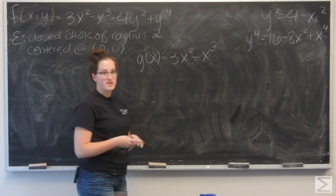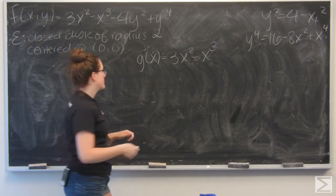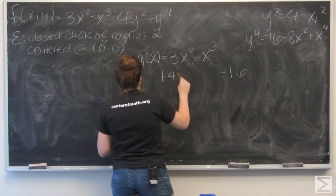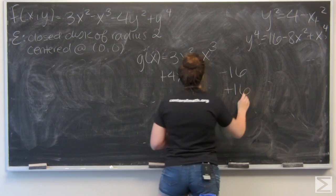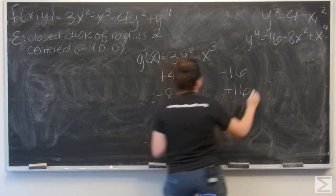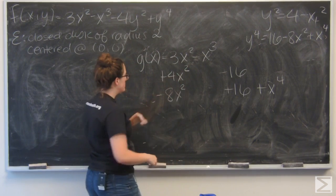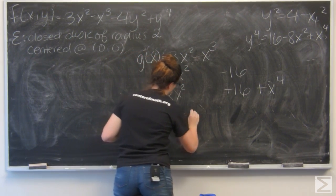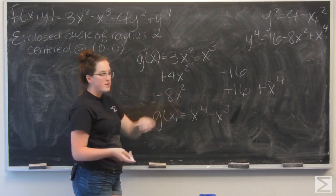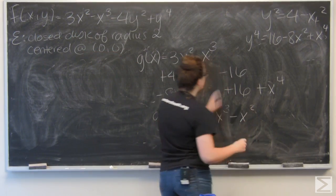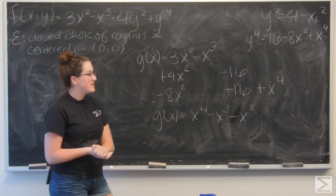Plugging those into f(x, y) to get g(x): the original x terms stay, then subtract 4y squared giving minus 16 plus 4x squared, then add y to the fourth giving plus 16 minus 8x squared plus x to the fourth. Adding it all up: x to the fourth minus x cubed. Combining x squared terms — 4x squared minus 8x squared gives negative x squared — and plus 16 minus 16 cancels out. So g(x) = x⁴ - x³ - x². Now I find its derivative and set it equal to 0.